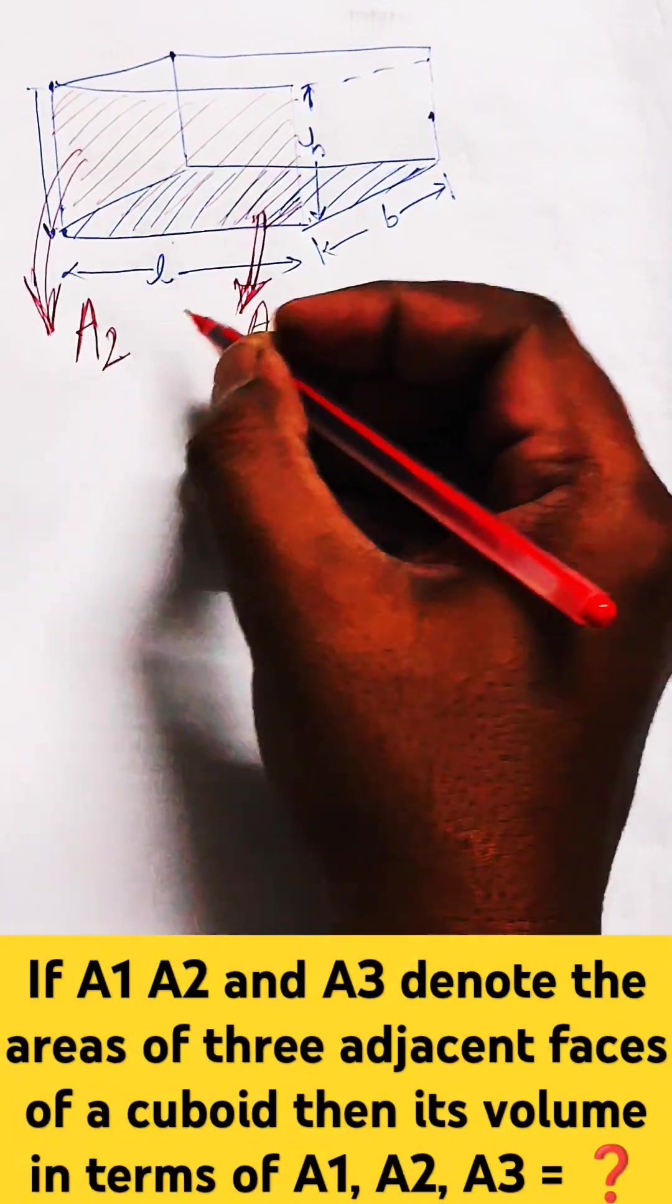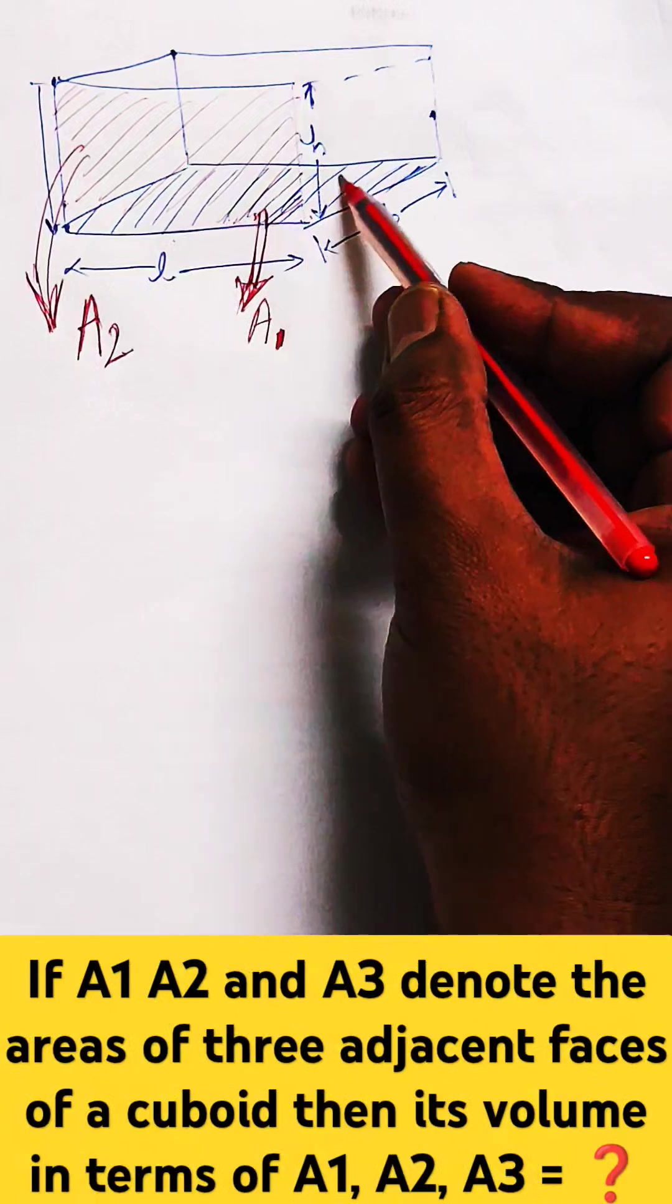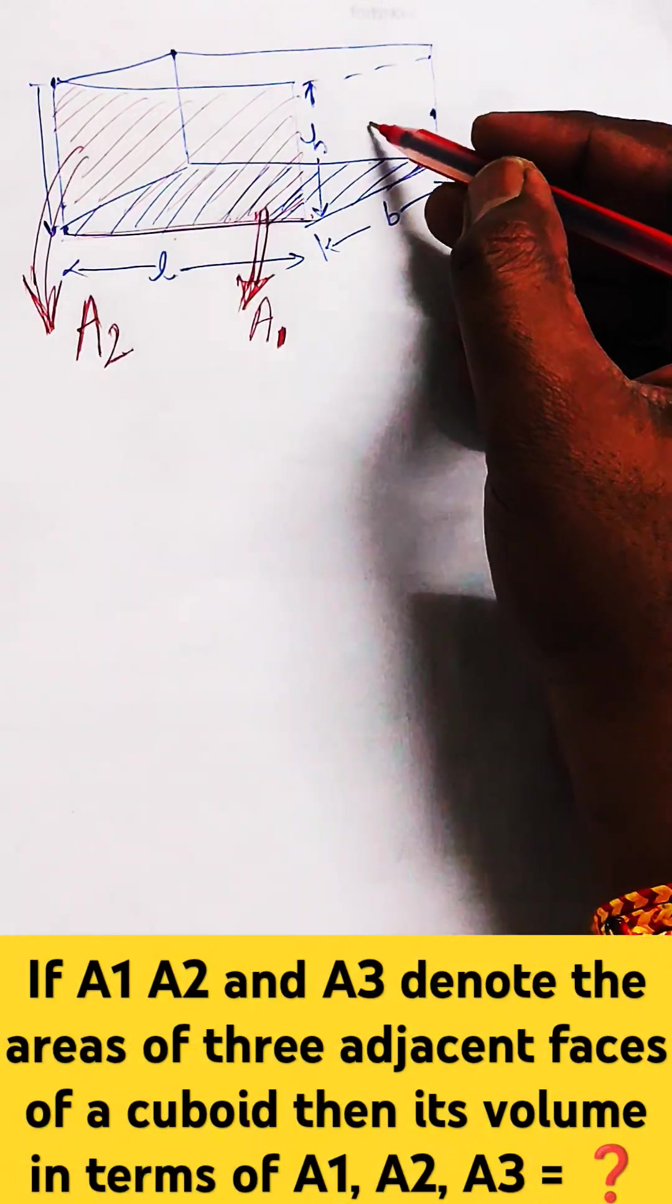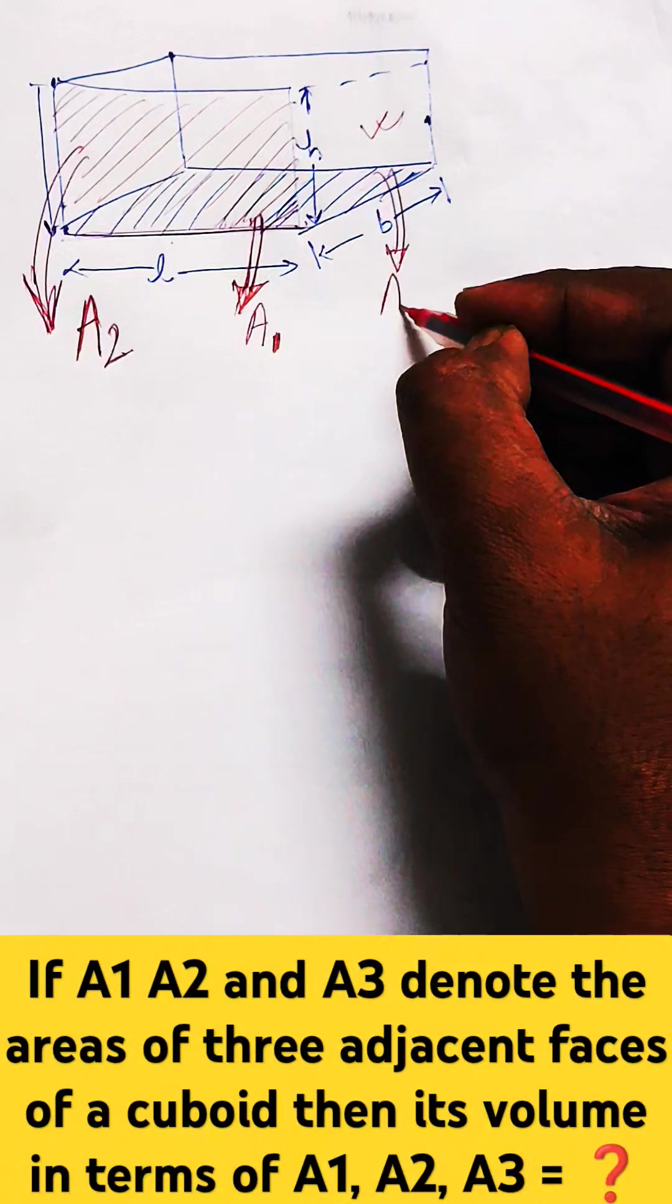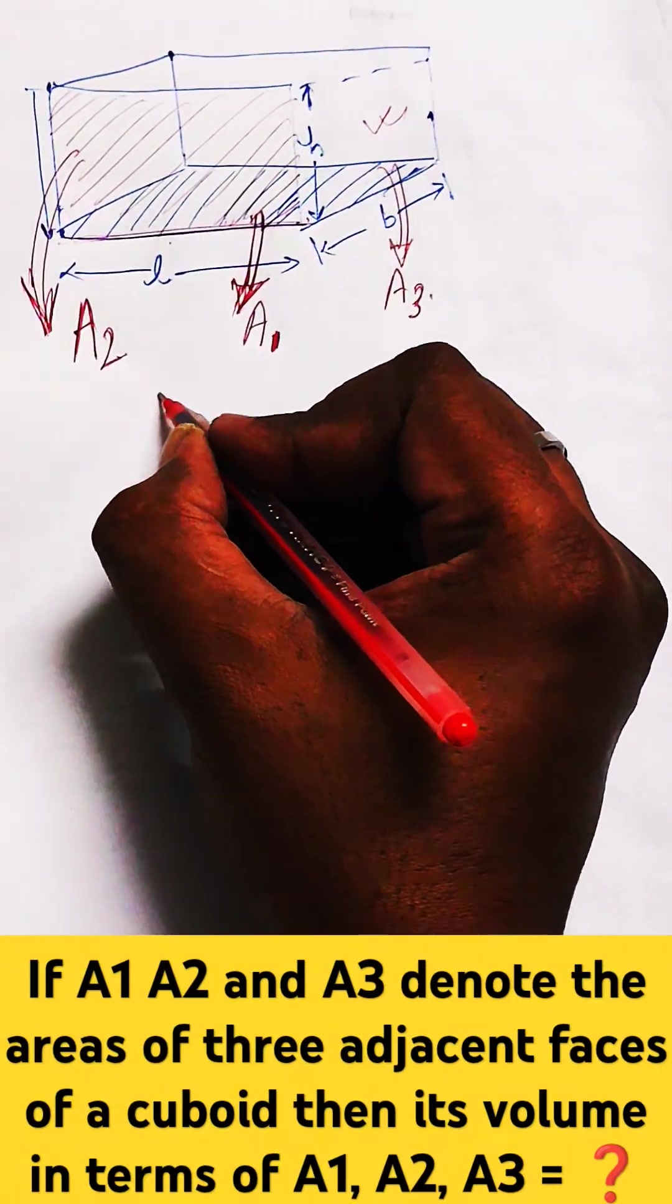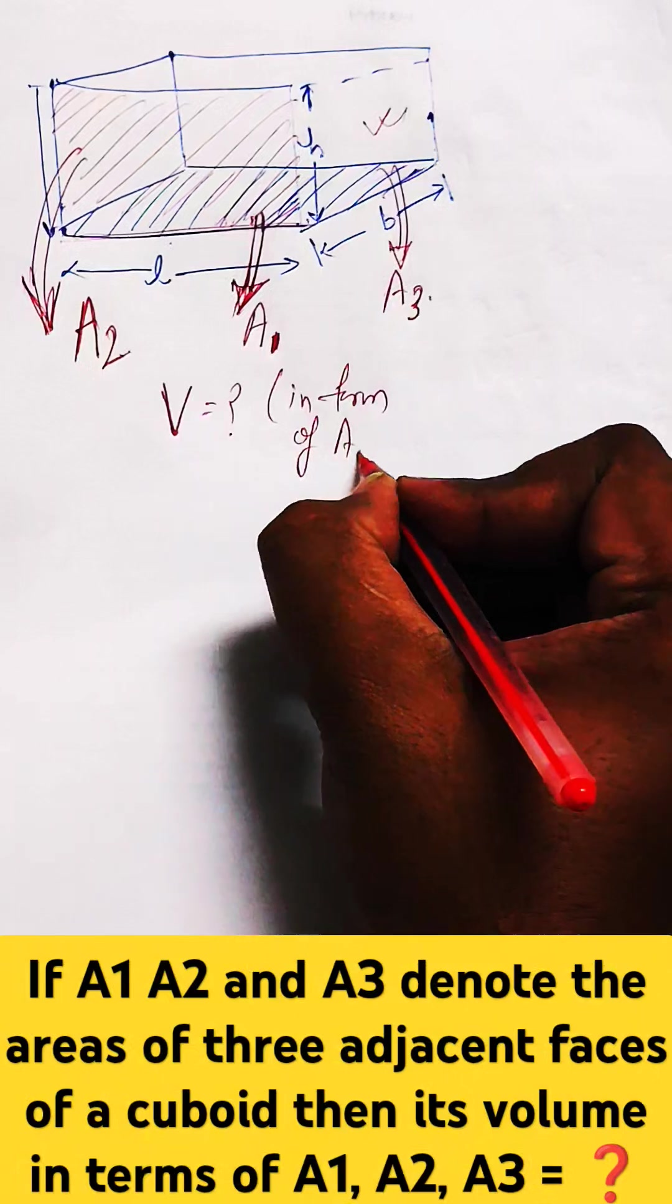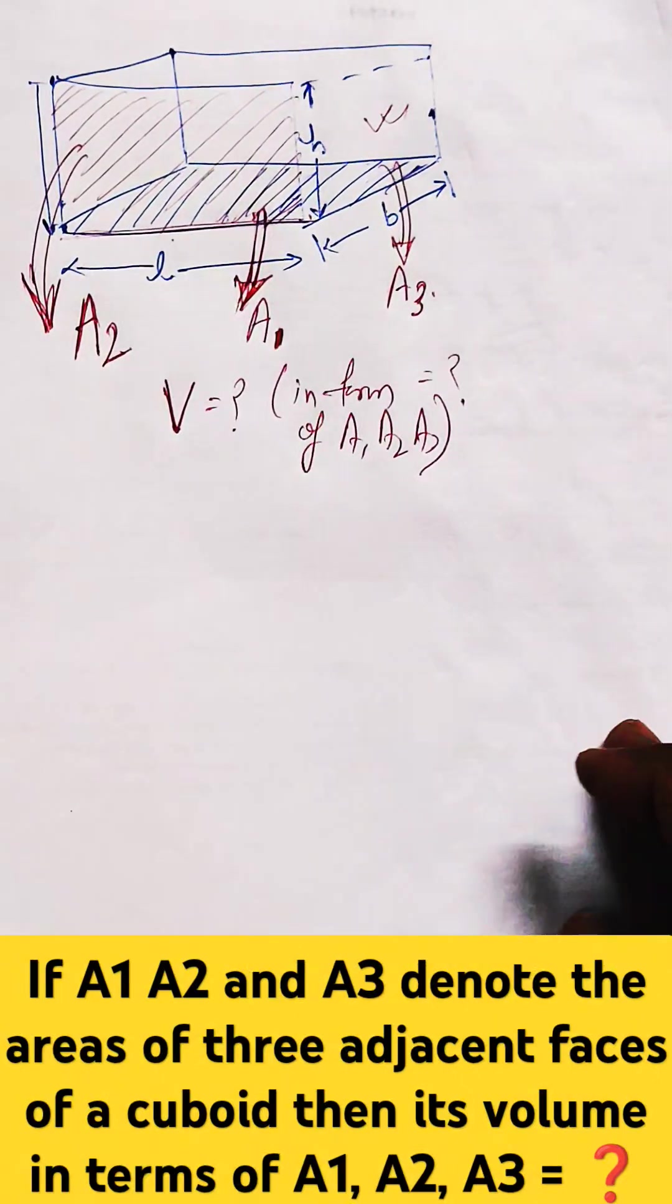And this is also adjacent to the bottom face, bottom area, you can see because this is common with this one with this one. Similarly, the third face will be this one, B into H and the area of this will be A3. Then we need to find the volume of this cuboid in form of A1, A2, and A3 is what? That we need to calculate.